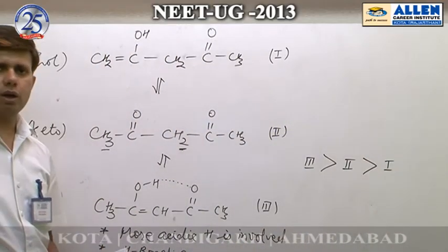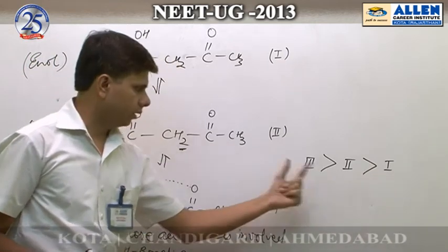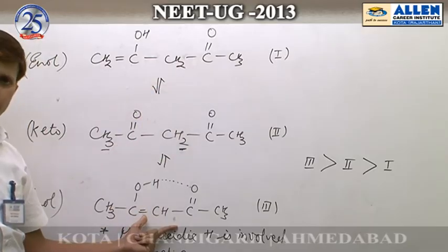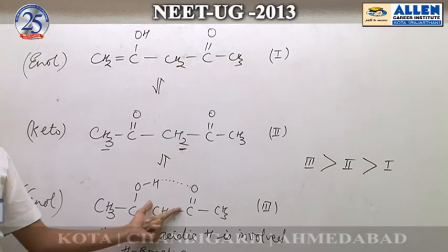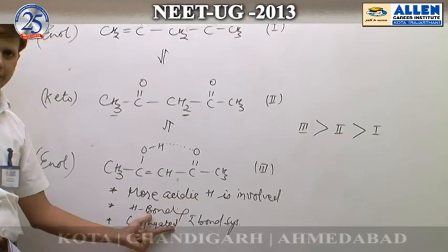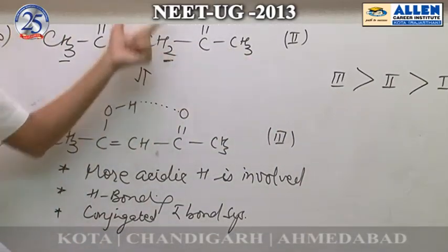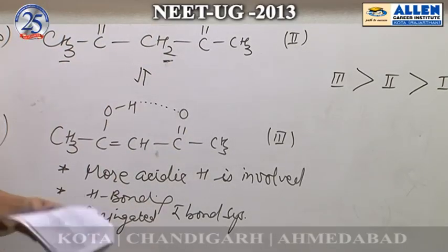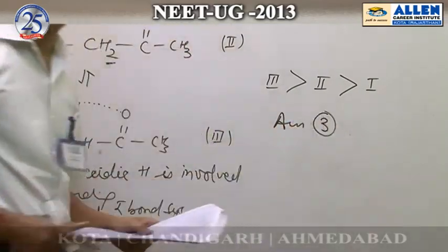So overall, the order of stability of these three compounds is 3 > 2 > 1. The third is the enol form, which is more stable than the keto form because of three factors: hydrogen bonding, involvement of more acidic hydrogen, and a conjugated pi bond system. The second (keto form) is still more stable than the first (enol form) due to thermodynamic stability. So the correct answer is the third option.